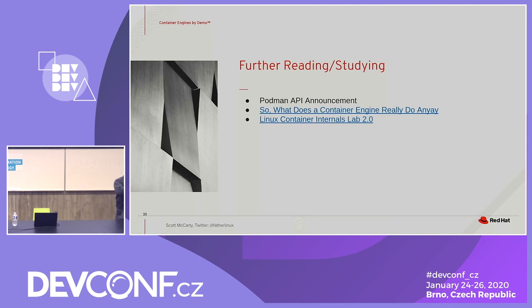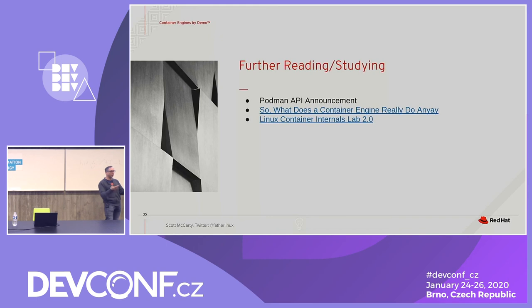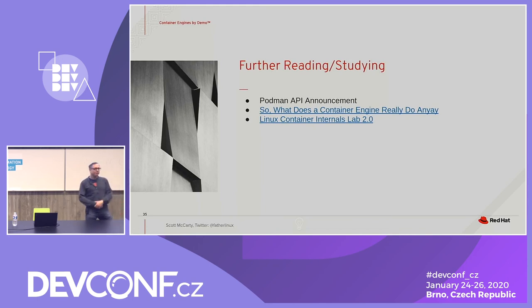Going a step further: with rootless Podman, users have their storage in their home directory — different users can't see each other's storage. That's something Docker can't do because everybody's storage is in `/var/lib/docker`. If one user creates an image with passwords accidentally embedded, all other users can see that storage. Whereas with rootless Podman, it's basic Unix 101 — everybody's storage is in their home directory, like `.local/share/containers`.